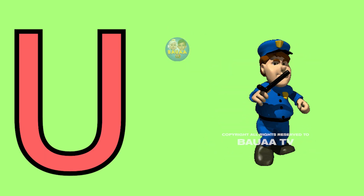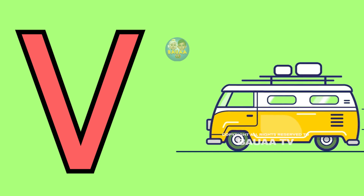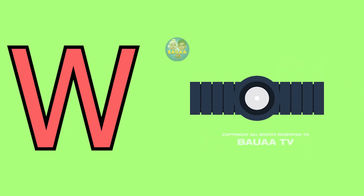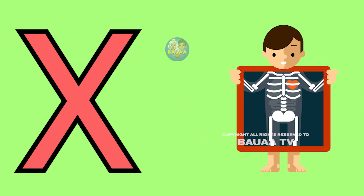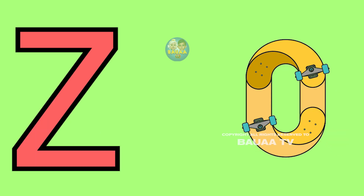U for unicorn, V for van, W for watch, X for x-ray, Y for yo-yo, Z for zero.